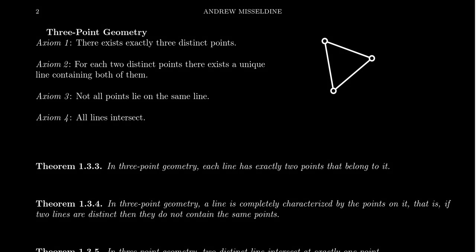In this video, I want to recast our Fee-Foe axiomatic system into the language of geometry. You'll remember previously that with our Fee-Foe axioms and axiomatic systems, we introduced these things called Fee's. What we're going to do is, instead of calling them Fee's, we're now going to call them a point. So interchange the word Fee with point and interchange the word Foe with line.